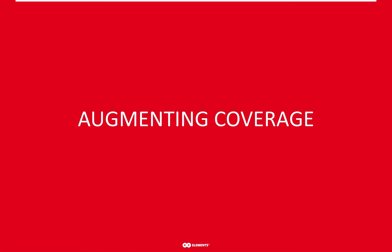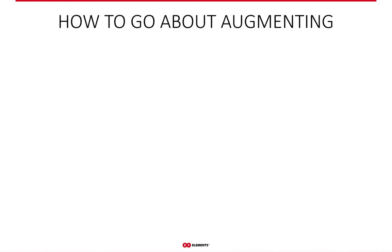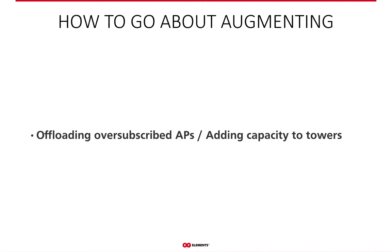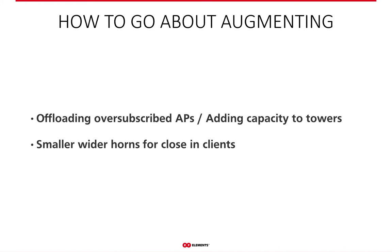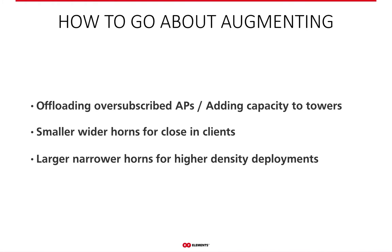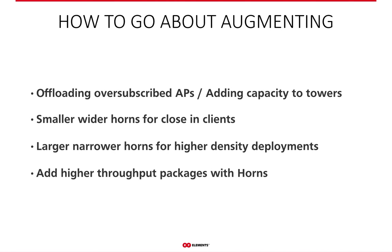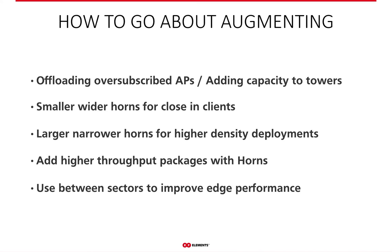How do you go about augmenting your existing network? You might want to start testing Horns by offloading your heavily loaded access points, or extending the capacity of these towers. Once you decide which ones those are, it is smart to consider which Horns might do the best job, since you now have 10 different tools to choose from. Smaller Horns for closer distances and clients, larger Horns for higher customer density and distance. If you want to offer higher packages to premium customers, Horns enable this as well. Or maybe you want to improve network performance at the edge of the sectors because of customer complaints about unstable connections. All these scenarios are perfect use cases for Horns.